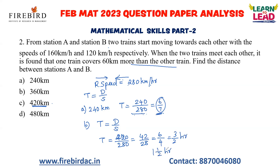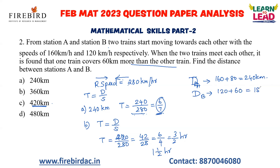Distance covered by train B in 1.5 hours is 120 + 60 = 180 km. The difference between the two distances is 240 − 180 = 60 km. Train A has covered 60 km more than train B, which satisfies the given condition. So the correct answer is 420 km.